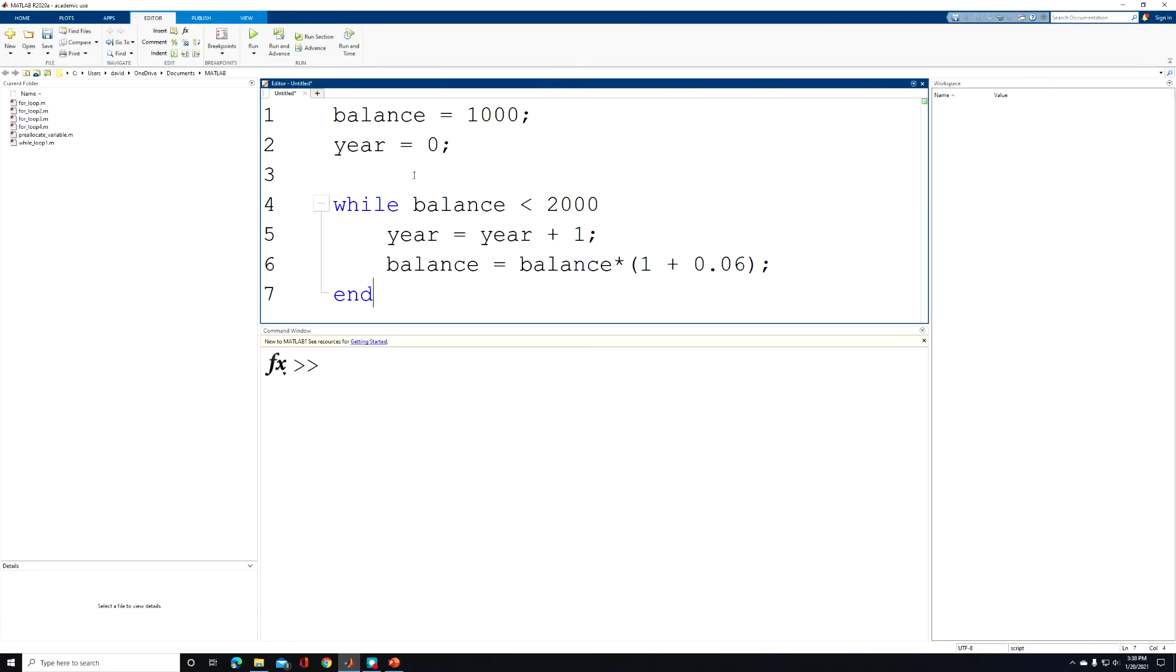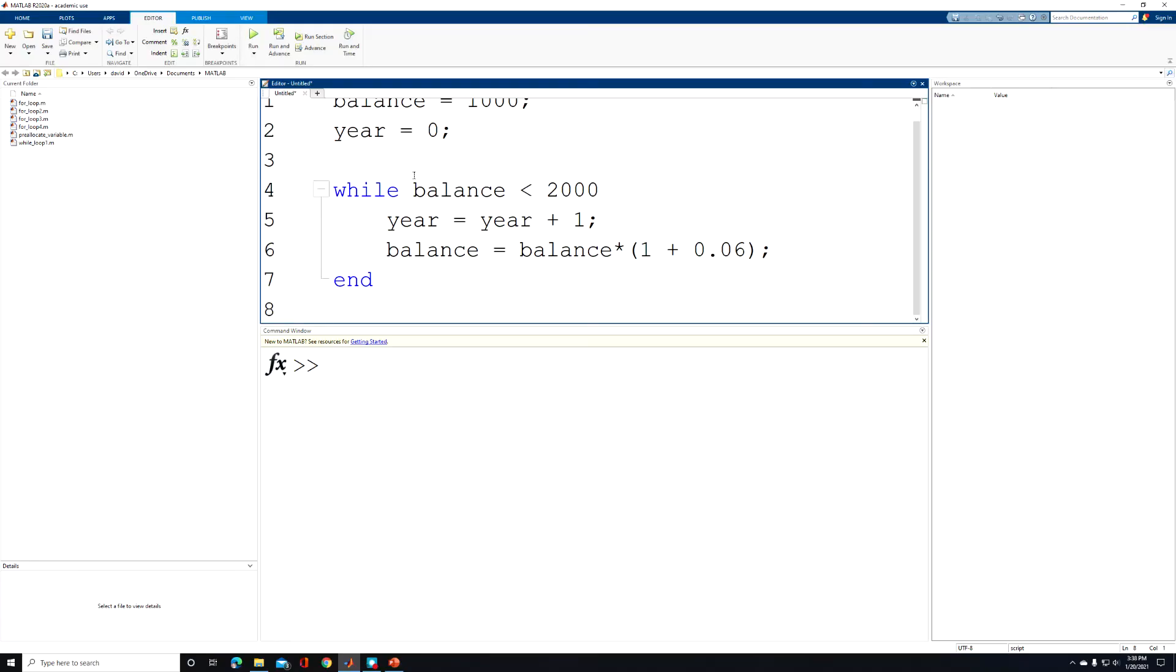Now I'll end the while loop. And as soon as our logical expression evaluates as false, the while loop will end. And what we want to do is to display our ending balance and how many years that it took to reach that balance.